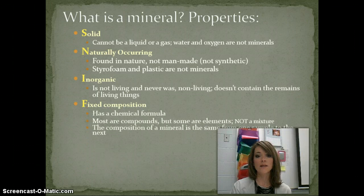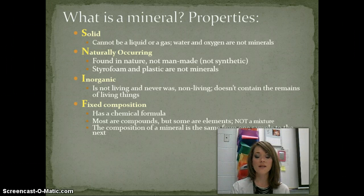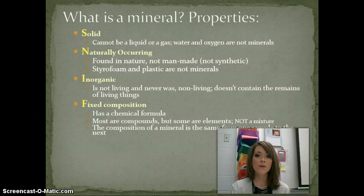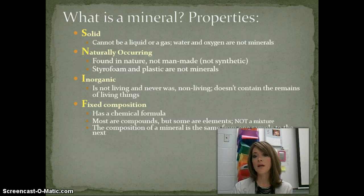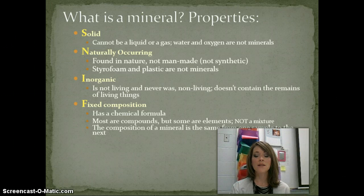The fourth characteristic is sometimes a hard one for students. It has a fixed composition, meaning it's either an element or a compound. Generally most minerals are compounds. There are a few, like gold, that are elements. But they have the same chemical formula no matter where you find them. If you find a particular mineral like halite in one state and another sample in another state, it's going to have the same chemical formula — it's always going to match from one sample to the next.